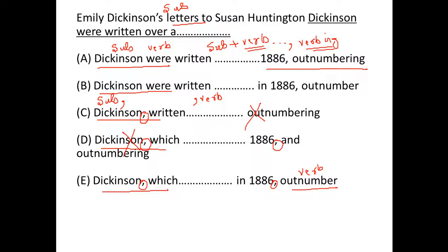Now, here if you look at the first verb it says Emily Dickinson's letters were written. Written doesn't lead to outnumbering. We don't have cause and effect in this sentence. If we don't have cause and effect we don't need cause and effect structure. Eliminate A.